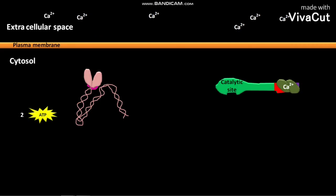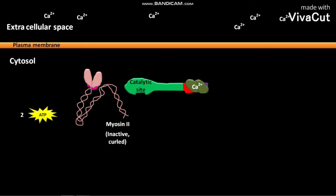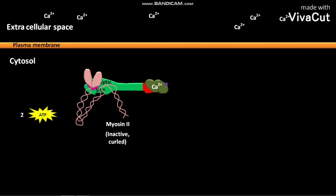The cytosol of the cell may also contain myosin-2 in its inactive curled state with myosin light chains. The active MLCK can also bind to the inactive curled myosin-2. The cytosolic 2-ATPs then bind to the myosin light chains. In the presence of MLCK, 2-ATPs are converted to 2-ADPs and 2-phosphates. This addition of phosphate groups to the myosin light chains is called phosphorylation.